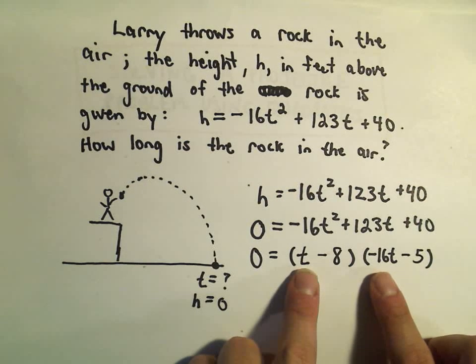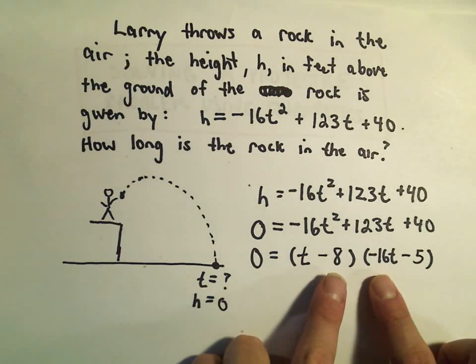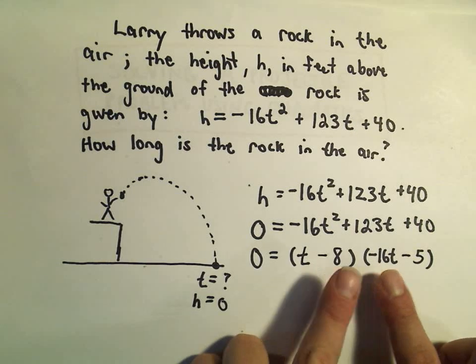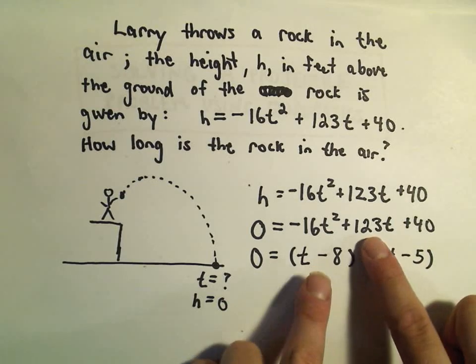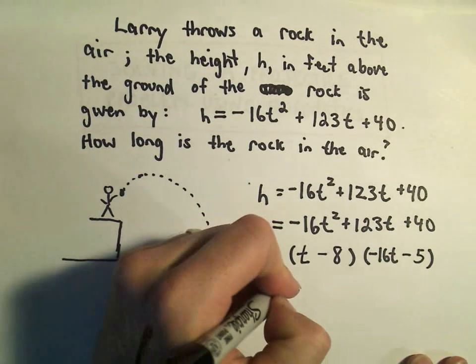We'll get negative 16t squared minus 5t. Let's see. When we take negative 8 and negative 16, that's positive 128. Positive 128 minus 5 will give us the positive 123, and then we'll get our positive 40. Okay, so this works.